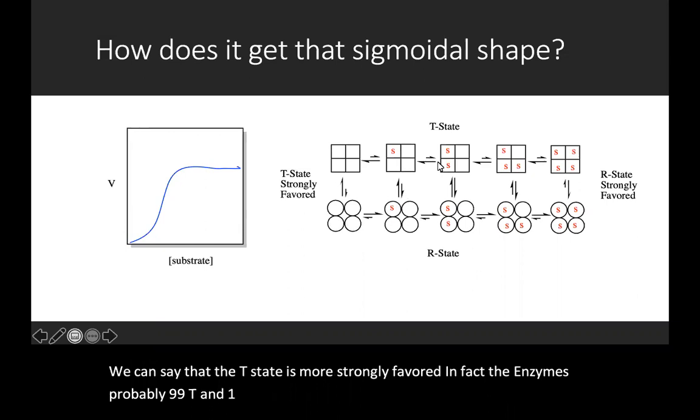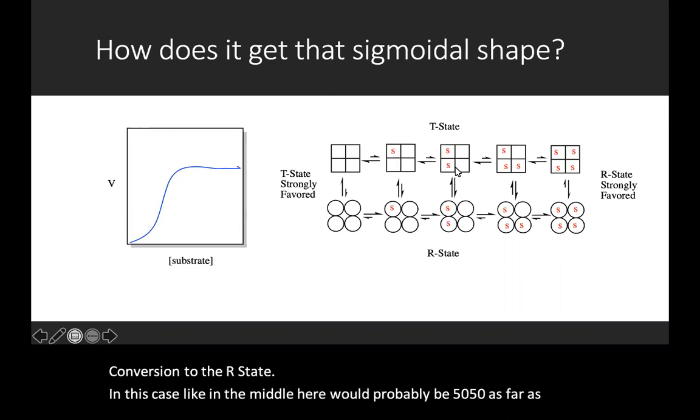As substrate binds, we get more and more conversion to the R state. In this case, like in the middle here, it would probably be 50-50 as far as the probability of it being in the R versus T state.